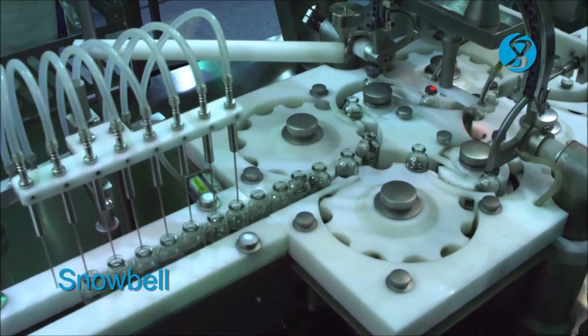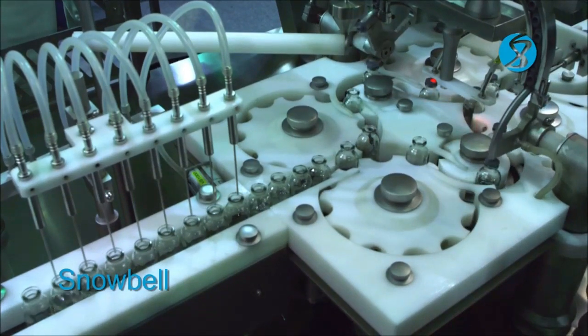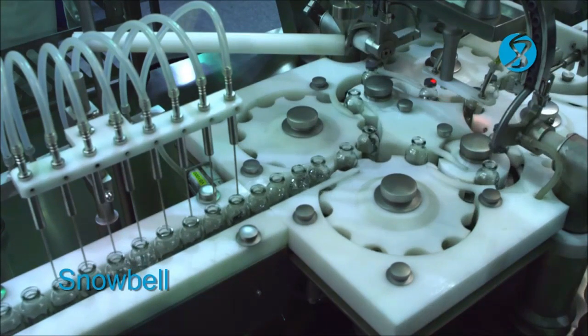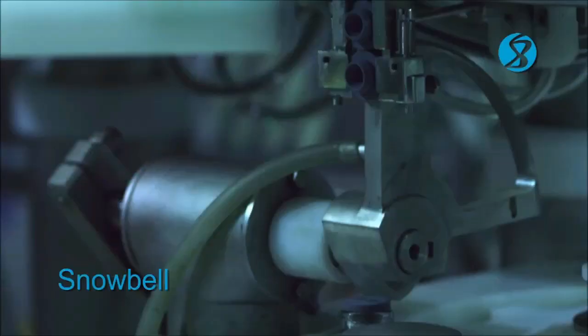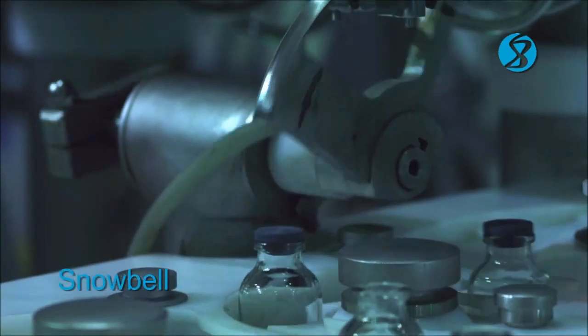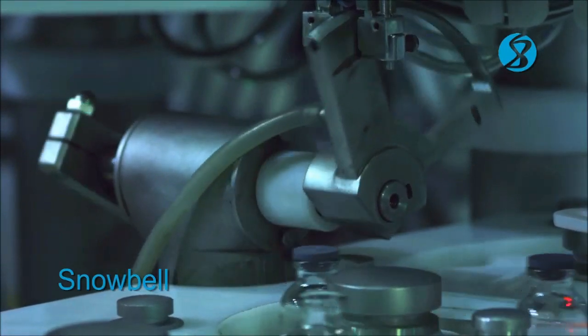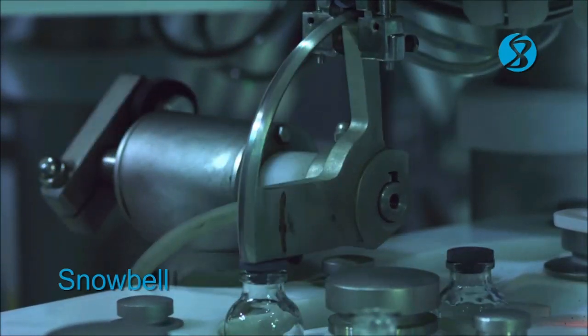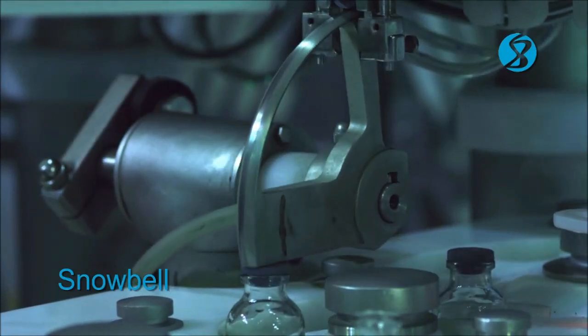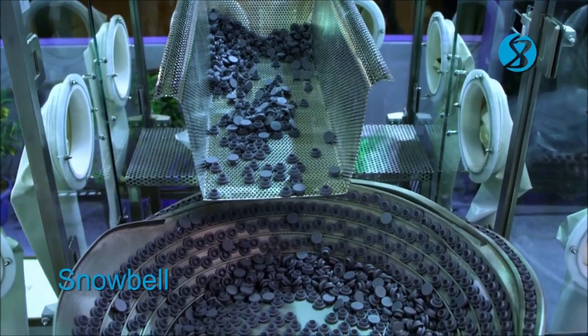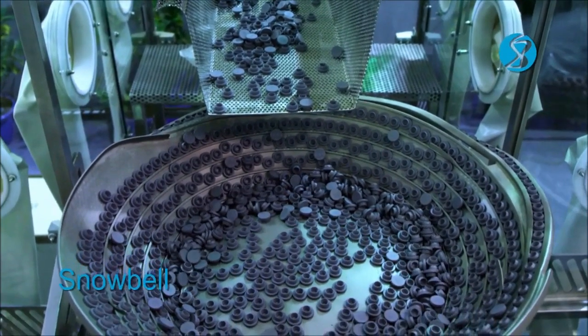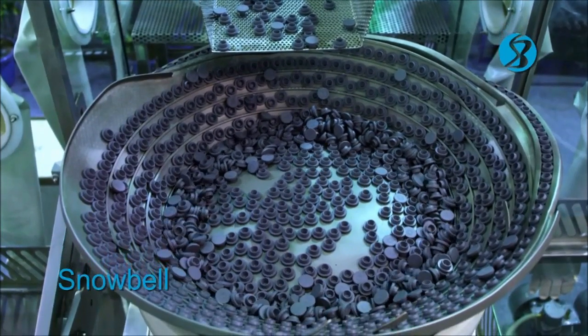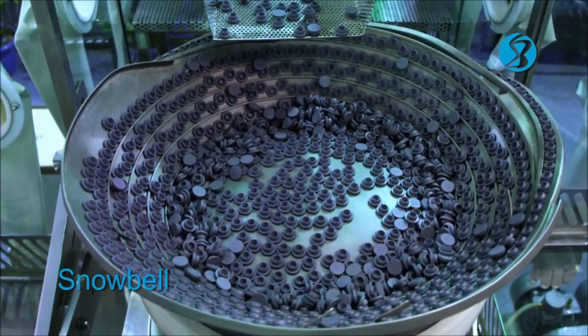Vials released from the dosing station are further indexed to the stoppering turret for stoppering operations. At the stoppering station, each vial is plugged by a stopper. Vibrating hopper orients the stoppers and delivers the stoppers on two tracks. Stoppers from each track are picked and placed on the orifice of the vials.